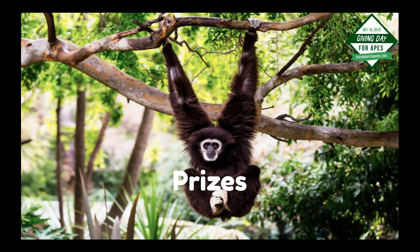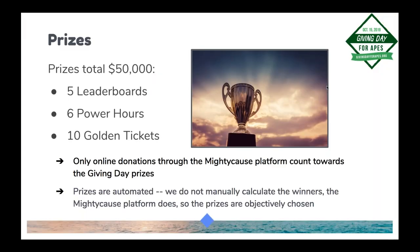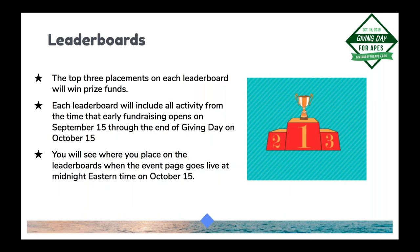We're really happy to offer that lower platform fee so more of the money raised can go toward helping the apes in your care. Now Jackie will talk about prizes. This year we have fifty thousand dollars to distribute in prizes through our leaderboards, power hours, and golden tickets. One rule: only donations through the MightyCause platform count toward Giving Day prizes. Prize winners are calculated automatically through the platform — we don't manually select winners or influence the outcome in any way.